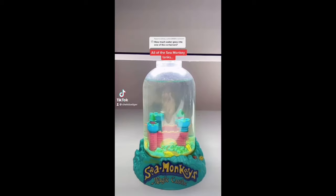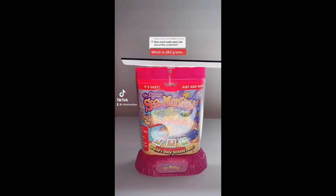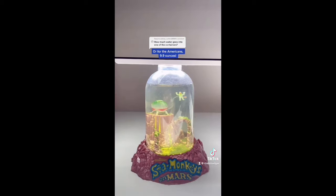Colored gravel is awesome but not for your sea monkey tank as it can pose a massive risk to your sea monkeys. Your sea monkeys can swim under the gravel and get stuck and die, so for that reason I recommend not adding it. All of the sea monkey tanks hold the same amount of water which is 283 grams or for the Americans 9.9 ounces.